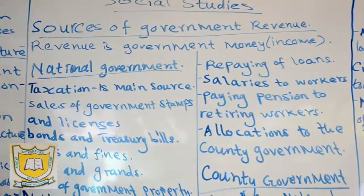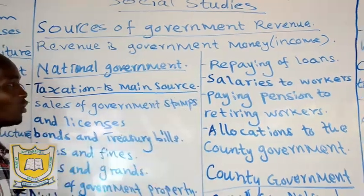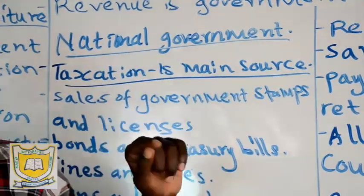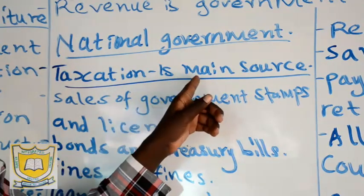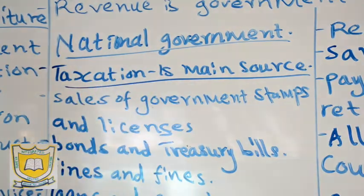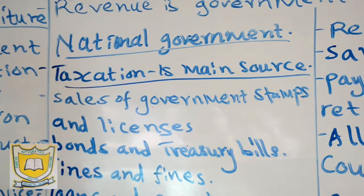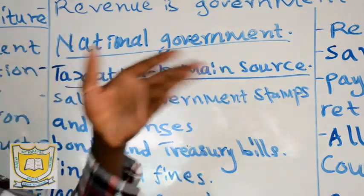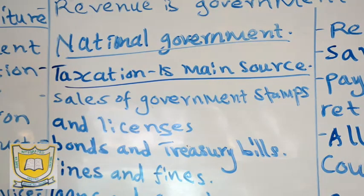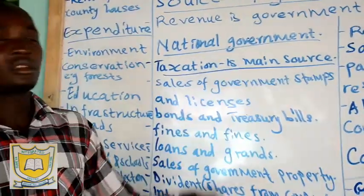Source of revenue number one: we have taxation. Taxation is the main source of national revenue. The national government mainly gets revenue from taxation. When you go to buy salt in the shop, there is a government levy there. When you buy petroleum, there is also a levy. The VAT is also part of taxation for the government. Import duties — where you are importing something from outside the country — you need to pay some money, and that is also a main source for the national government.